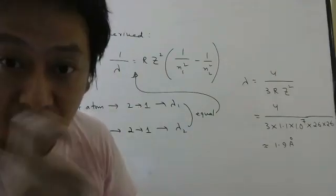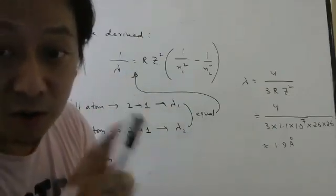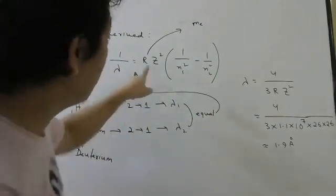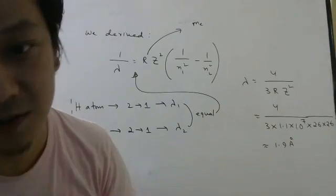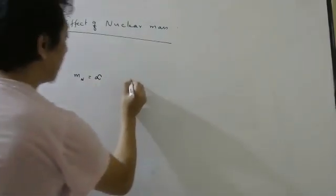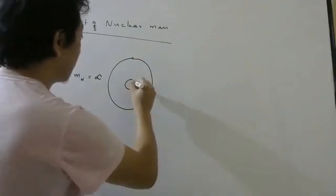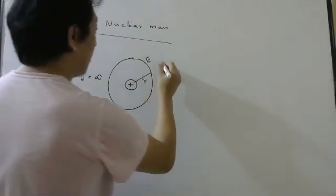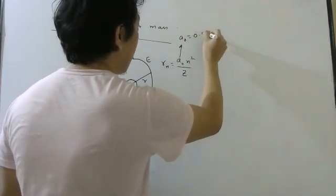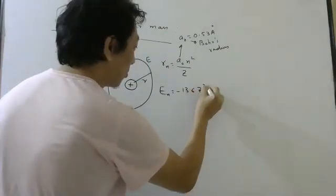So you have to now consider the finite mass of nucleus also. Then you will be able to realize that this wavelength will depend on not only the mass of electron. If you remember, I told you mass of electron is in the numerator, is in the numerator of Rydberg constant. But you will realize that it will depend on the mass of the nucleus also. Now, look here. If your nuclear mass is infinity, if your nuclear mass is infinity, then your nucleus is at rest and electron goes around this circle with some radius and some energy.